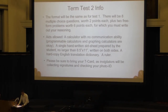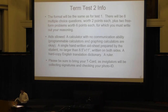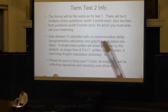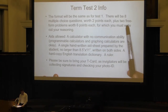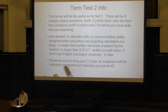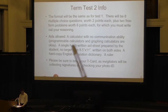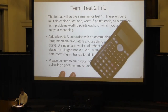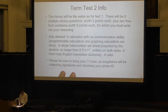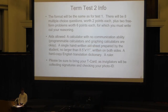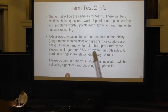The format is exactly the same for test 2 as it was for test 1. There are eight multiple choice questions worth two points each, plus two freeform problems worth six points each for which you must write out your reasoning. You're allowed to bring your calculator. Programmable and graphing calculators are okay because you're allowed an aid sheet — you can write as much as you can fit on there.